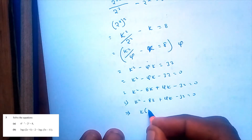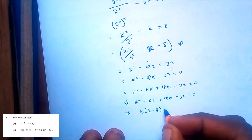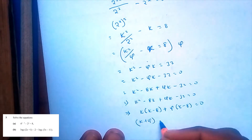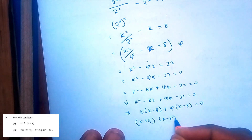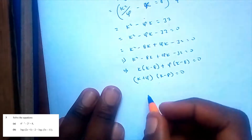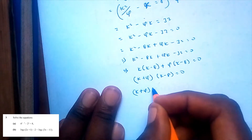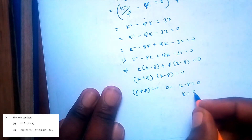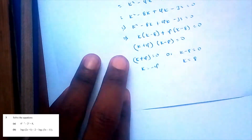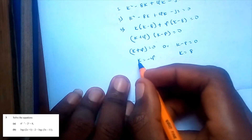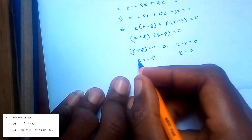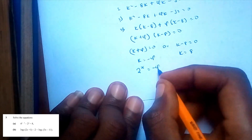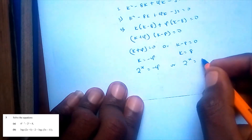So factoring: k(k minus 8) plus 4(k minus 8) is equal to 0. Therefore (k plus 4)(k minus 8) is equal to 0. Switching back, that means 2 to the power x is equal to negative 4, or 2 to the power x is equal to 8.